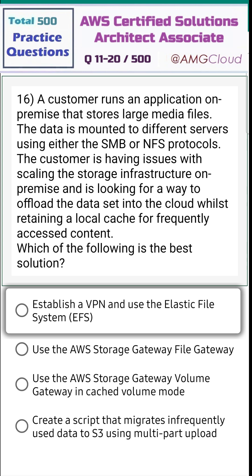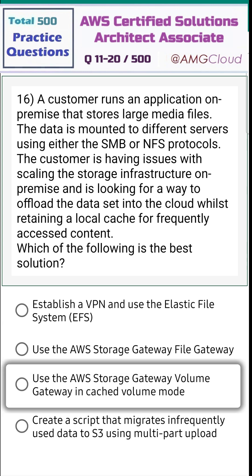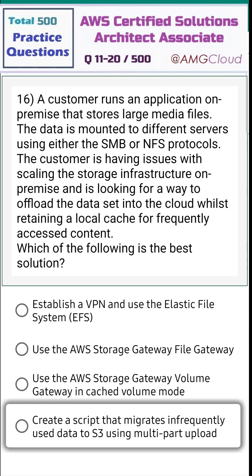Options: establish a VPN and use the Elastic File System; use the AWS Storage Gateway File Gateway; use the AWS Storage Gateway Volume Gateway in cached volume mode; or create a script that migrates infrequently used data to S3 using multipart upload.